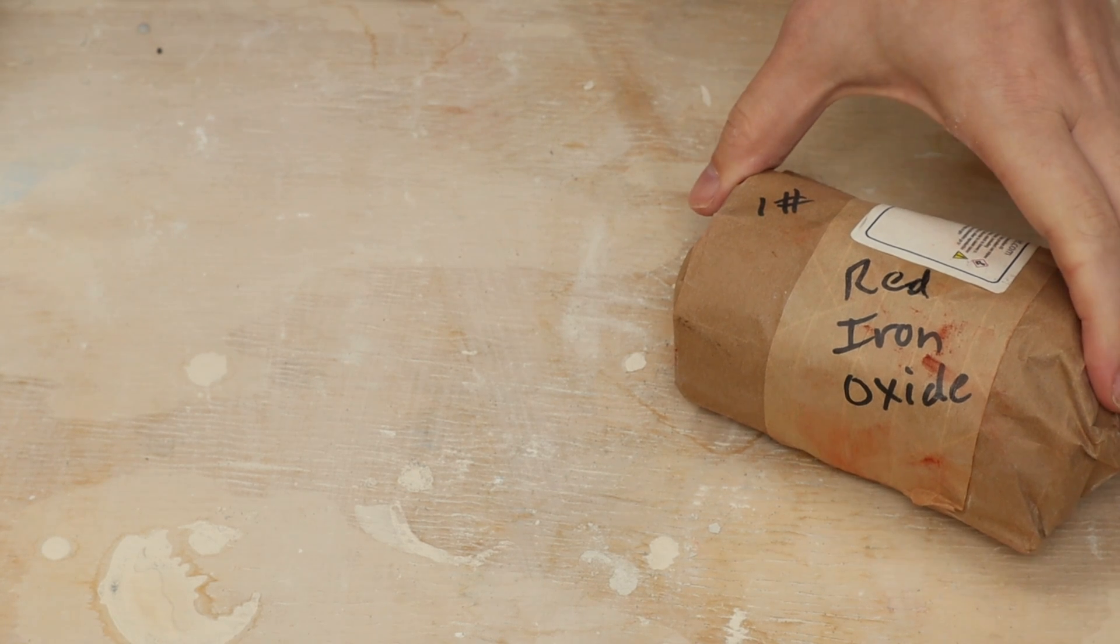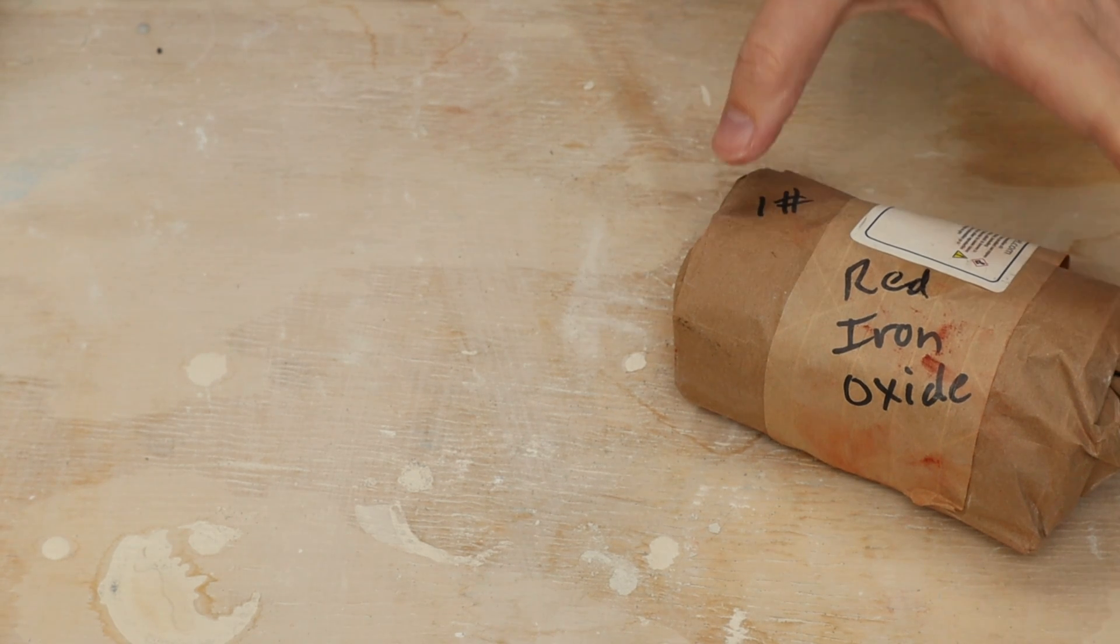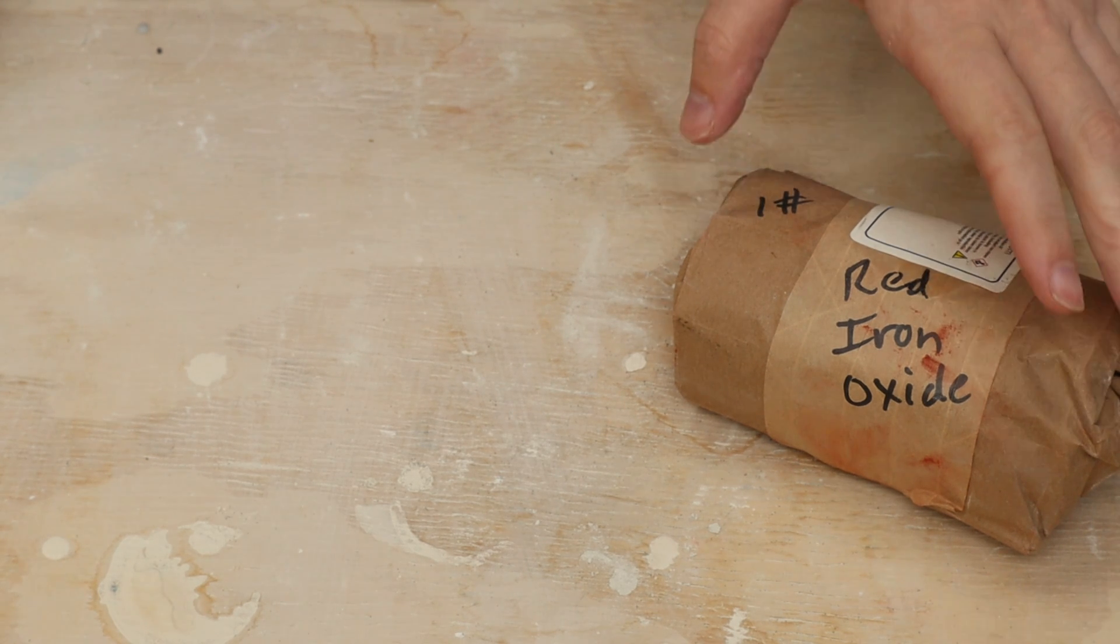My first ingredient is red iron oxide. This should make a reddish clay body in an oxidation firing which is what I'm doing. I'm using my electric kiln. I think in a reduction firing it'll actually turn darker, but I am not doing that.